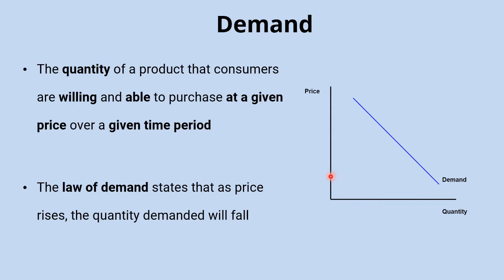For example, if this is the price of apples — say 20p — you'd have 500 apples demanded at 20p. If the price rose to 30p, fewer consumers would be willing and able to purchase those apples; they might look to alternative substitutes instead. So quantity demanded falls, giving you this downward sloping demand curve and that inverse relationship between price and quantity demanded.